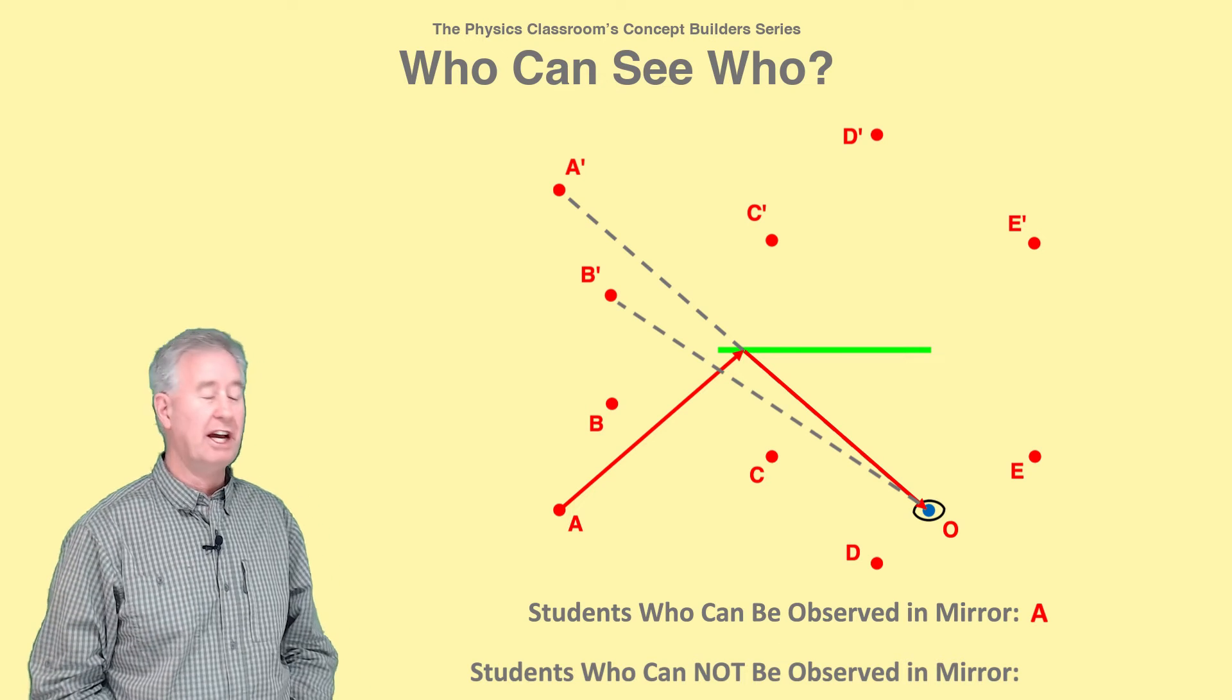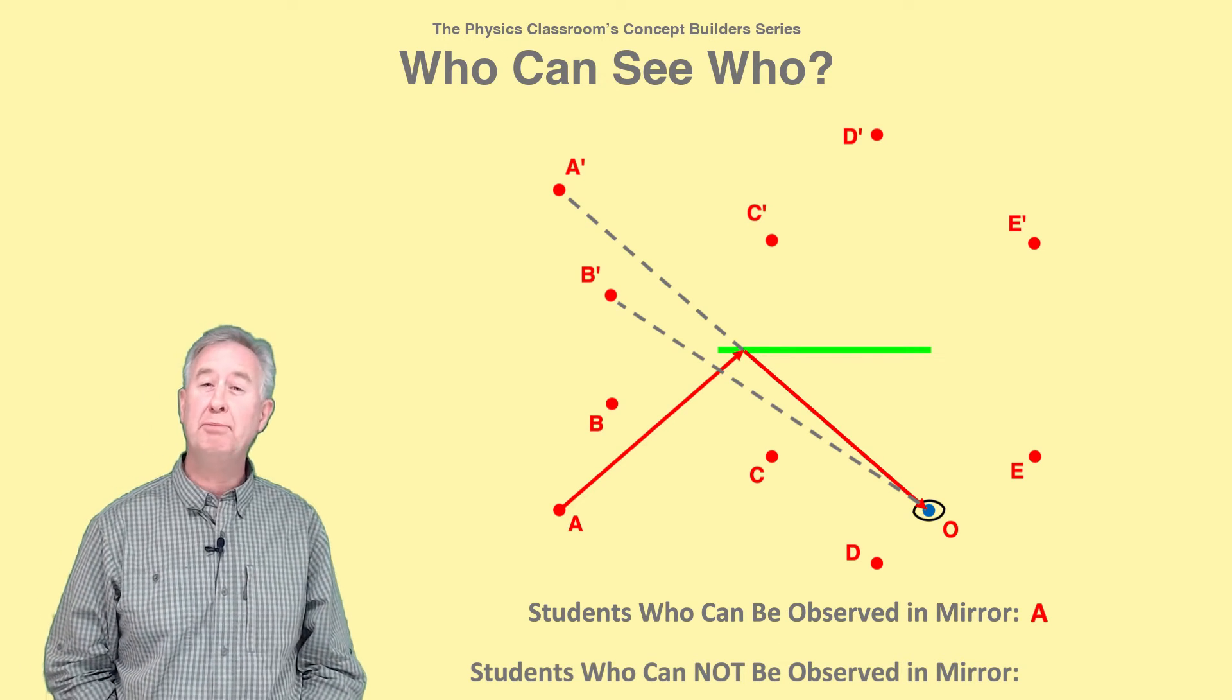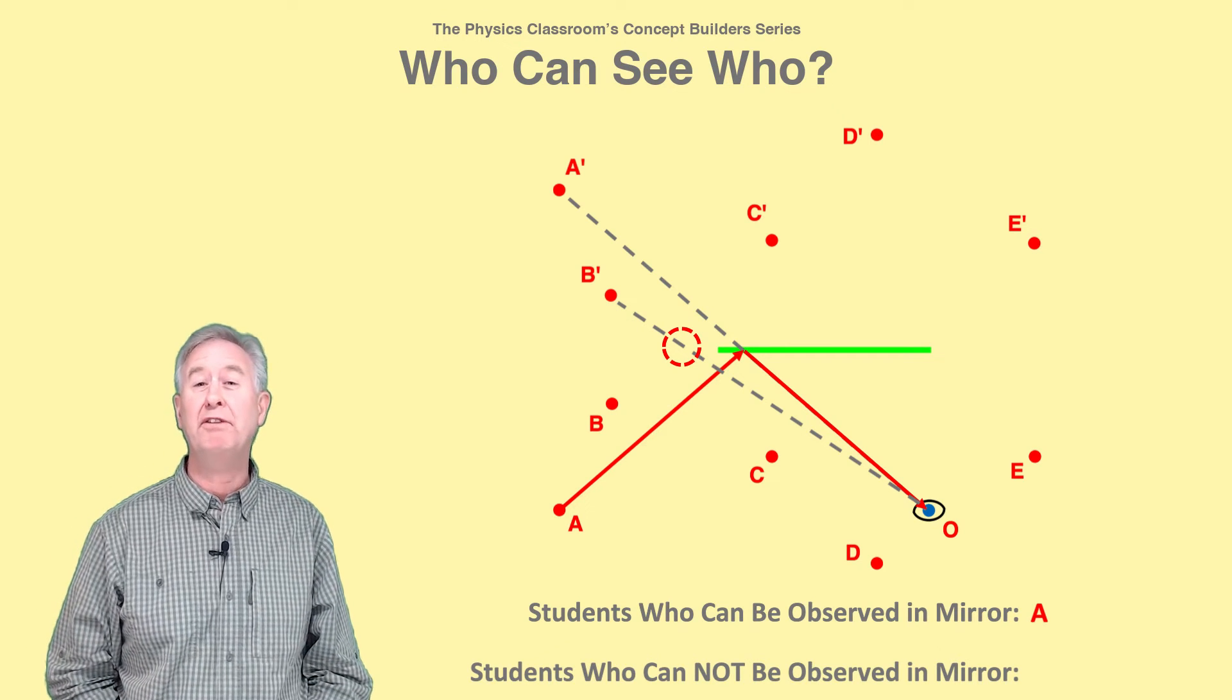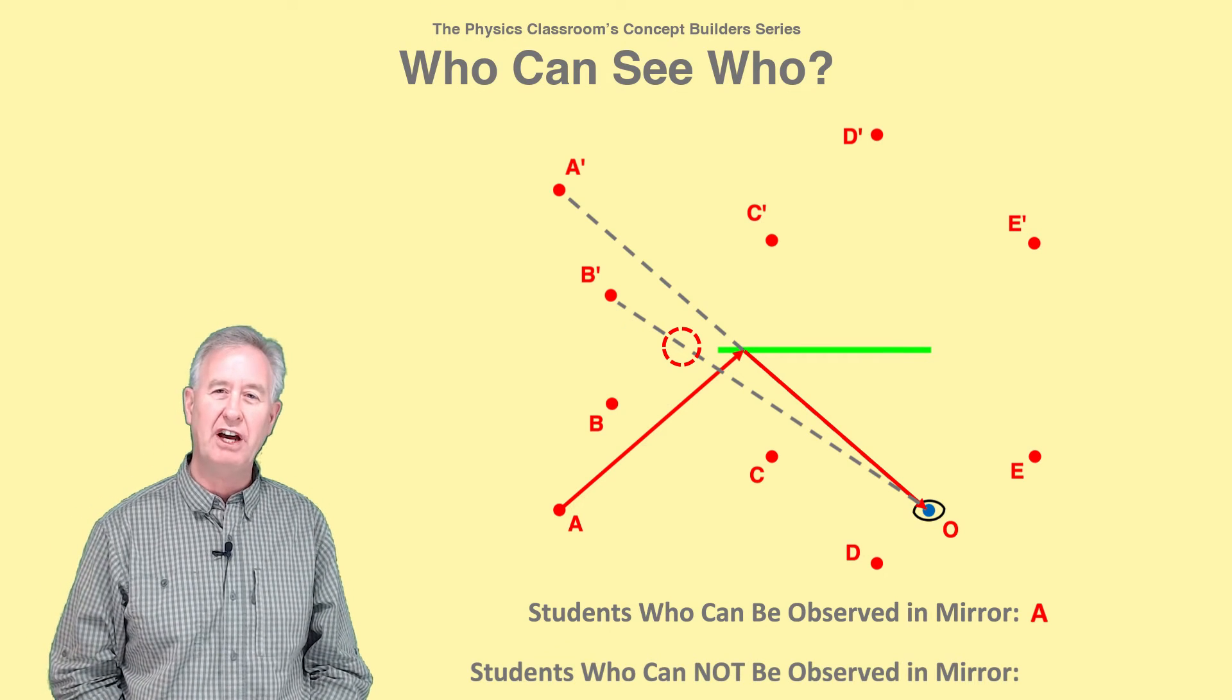But when the observer sights along a line at student B's image, there is no mirror along that line of sight to reflect light to the observer's eye. So this observer cannot see the image of B in the mirror.